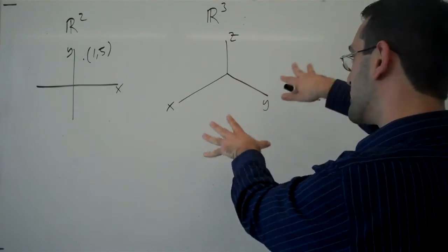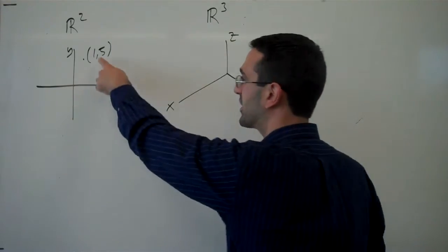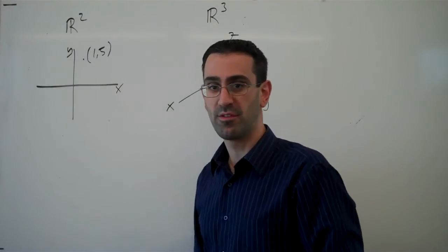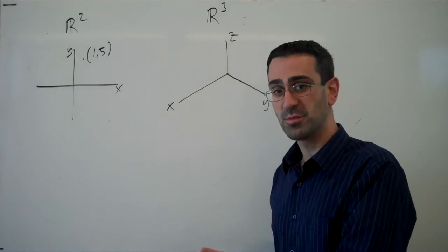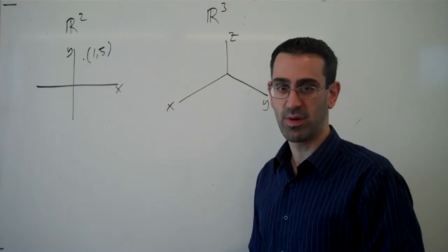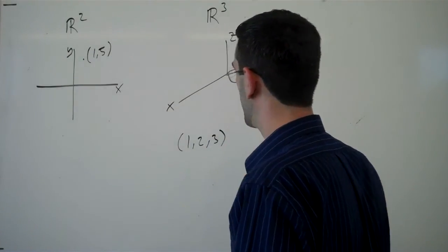So again, this is sort of a perspective drawing. And we can talk about coordinates here, just like we have the ordered pair 1, 5 there. We can talk about here ordered triples because we need three coordinates to represent a point. So if I had the point 1, 2, 3, for example,